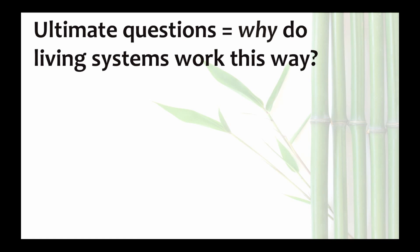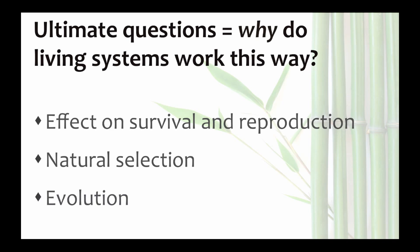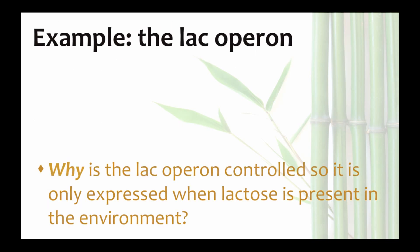What effect does the ability to express the lac operon only when needed have on survival and reproduction of the bacterial cell? Any differences will result in natural selection and selection on genetic variation among bacterial cells in how well they control their lac operon results in evolution. So we can speculate on why the lac operon is so tightly controlled and why bacterial cells have mechanisms to only express these genes when they are needed.